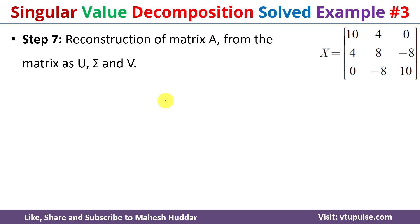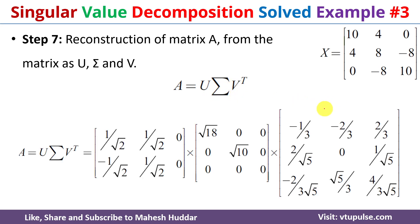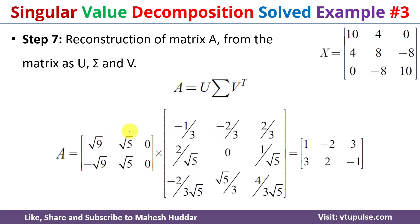Now we know the values of U, sigma, and V. We reconstruct matrix A using A equals U times sigma times transpose of V. Substituting those values and performing the matrix multiplications, we get the final answer as the matrix [1, -2, 3; 3, 2, -1], which is the original matrix. Since we recovered the original matrix, the singular value decomposition is correct. This is how we find the SVD for the given matrix.